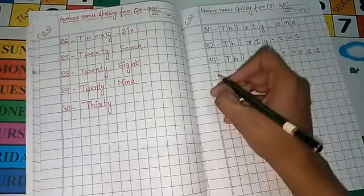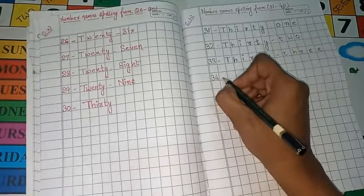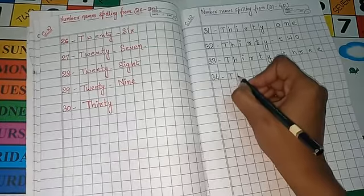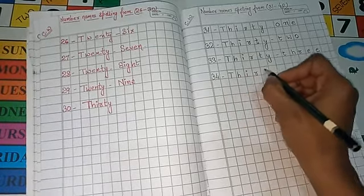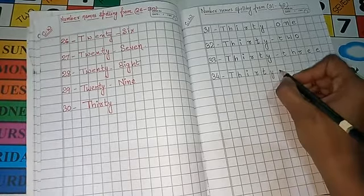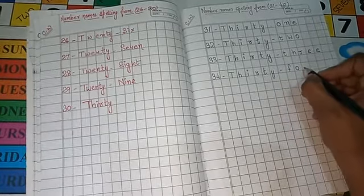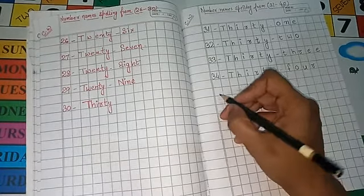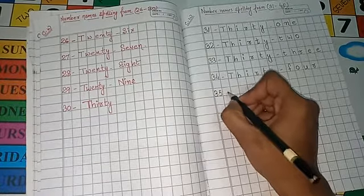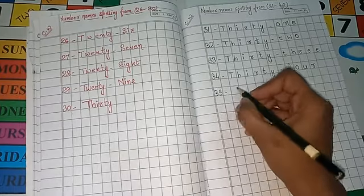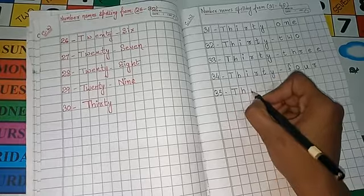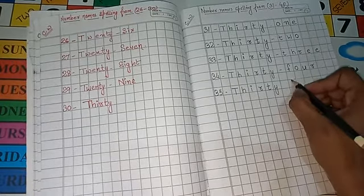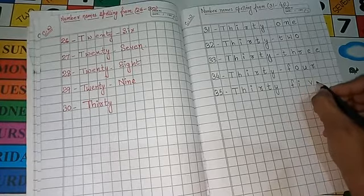Next, your next number is 34. The spelling of number 34 is T-H-I-R-T-Y, 34, F-O-U-R. Next is 35. The spelling of number 35 is T-H-I-R-T-Y, 35, F-I-V-E, 5.